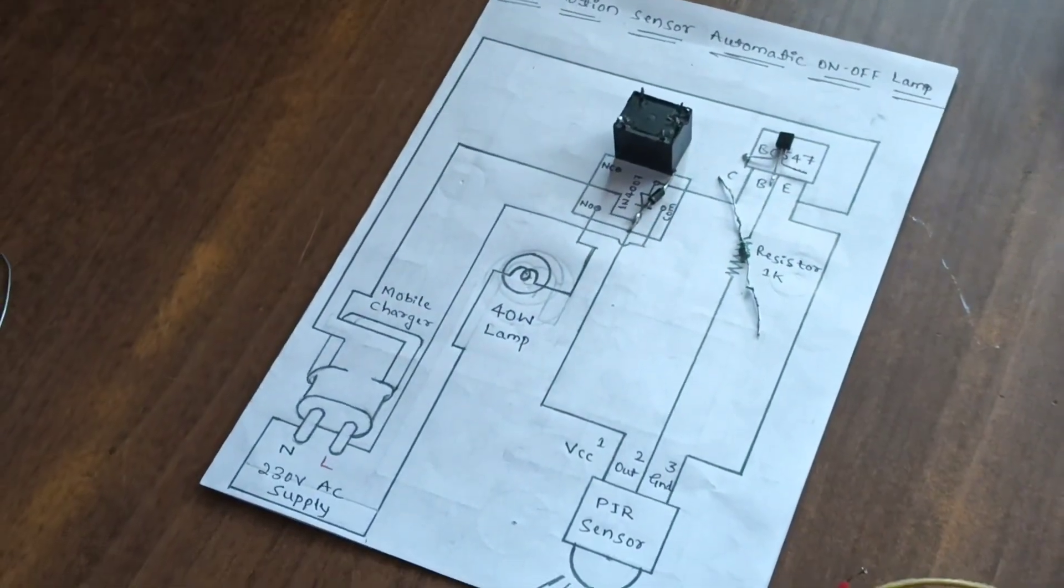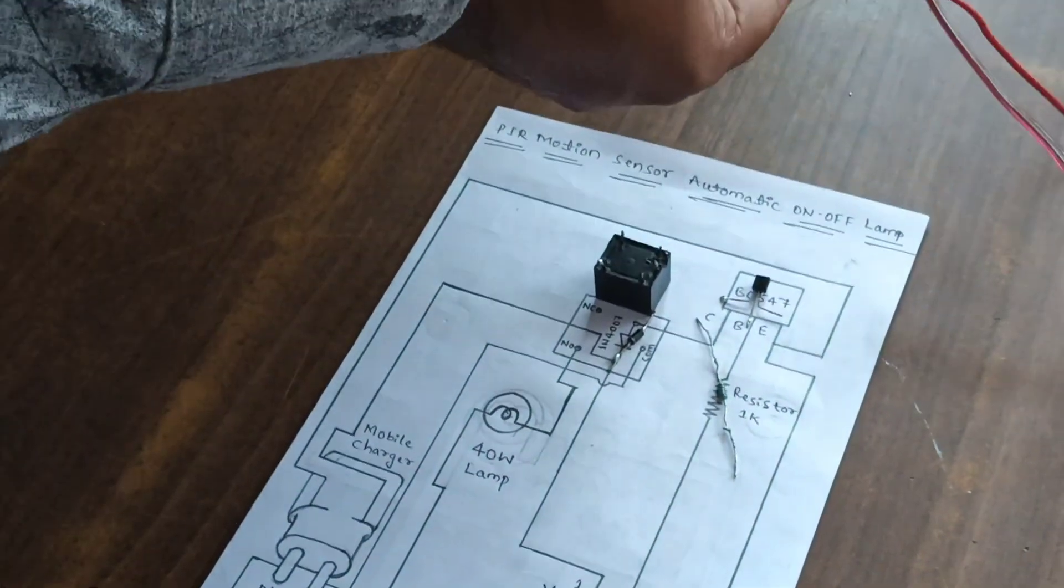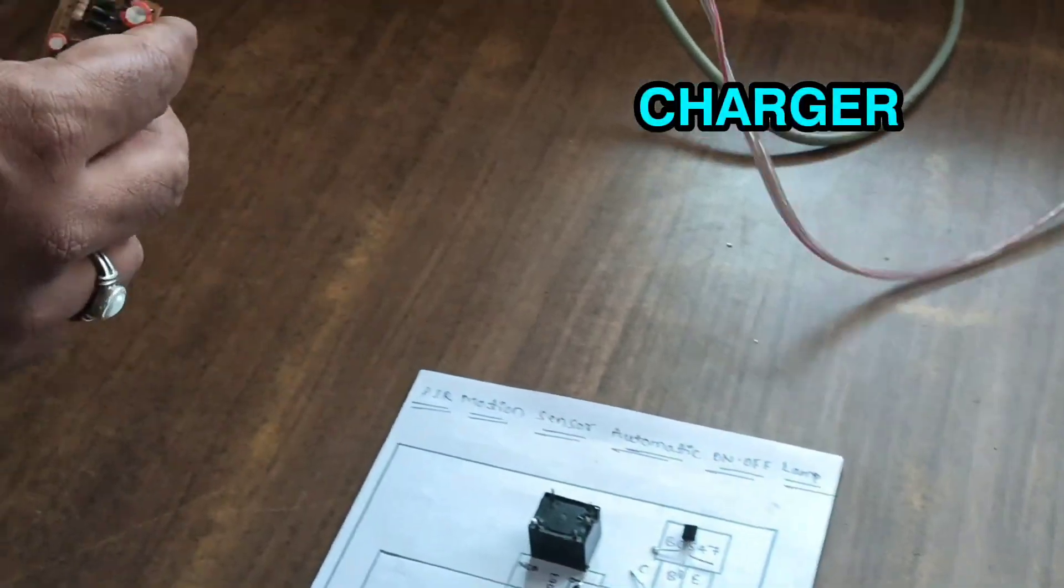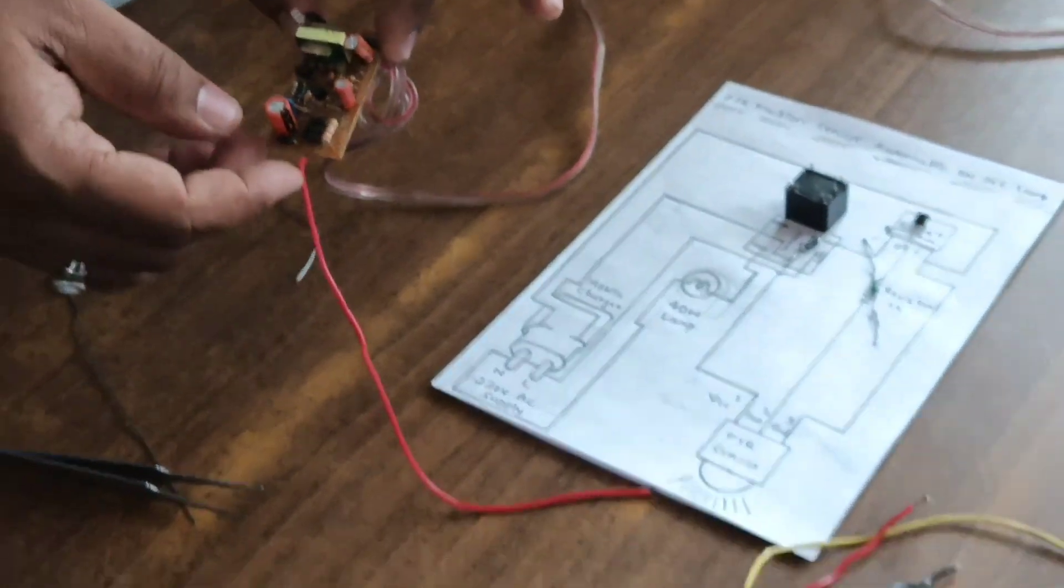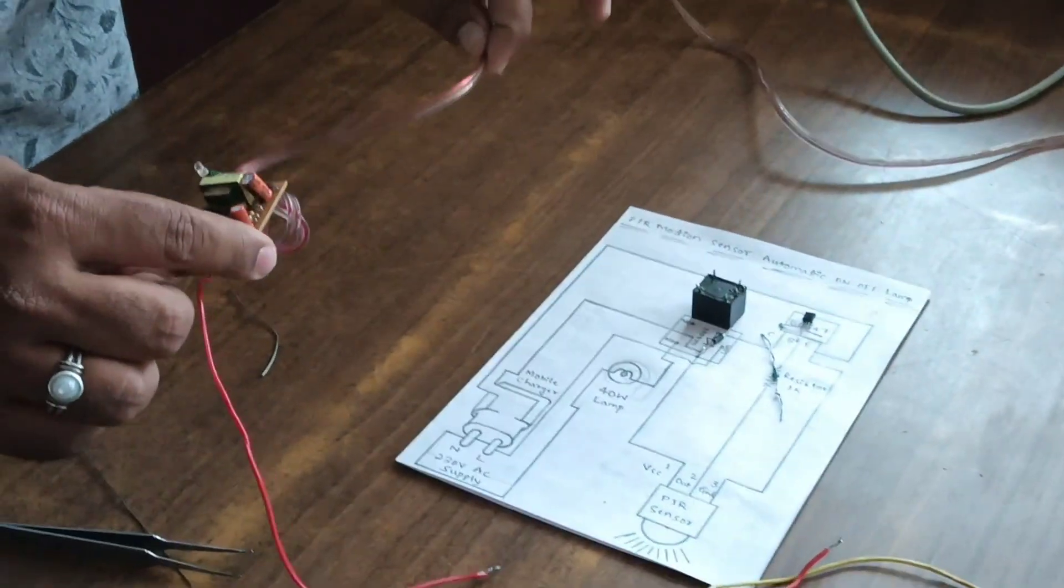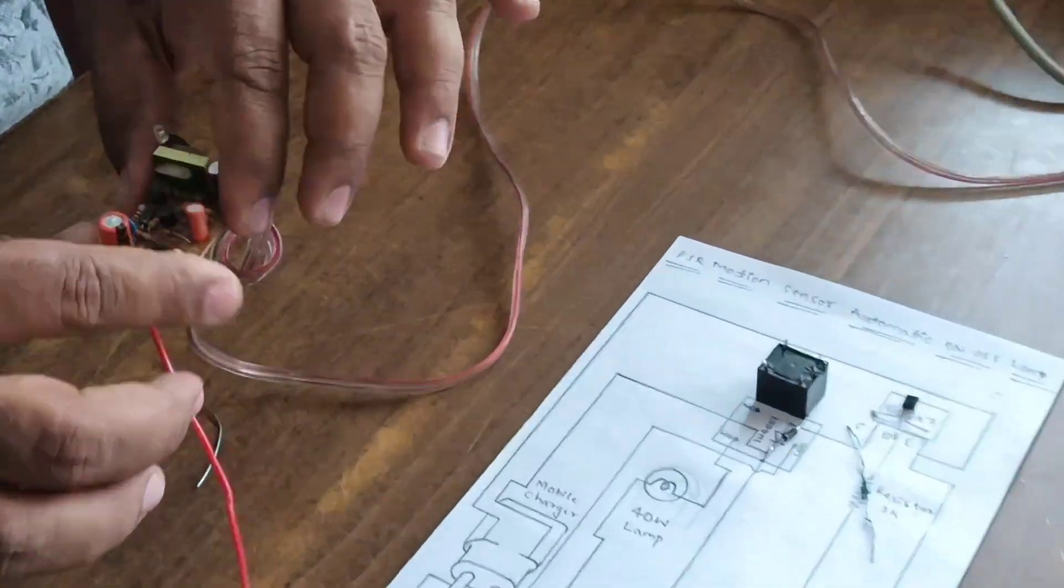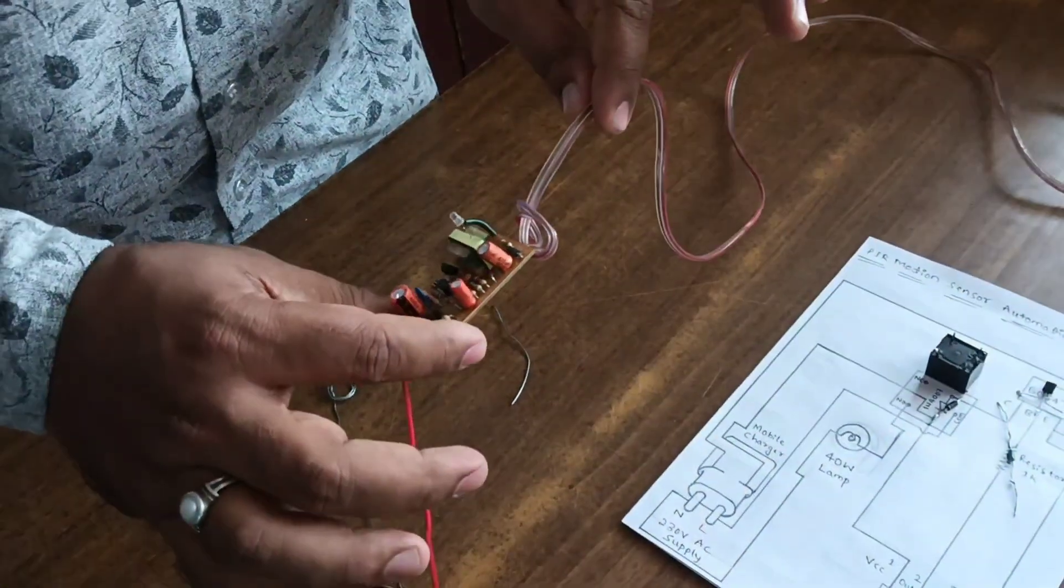Next, we used the charger, this is the mobile charger. You can take any mobile charger of output 5 volt, input 230 volt. So 230 volt input and this is the 5 volt output.